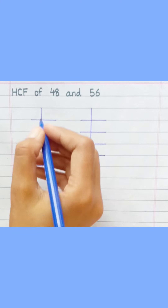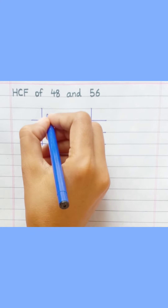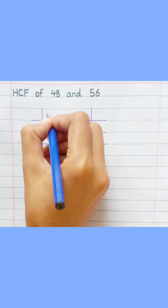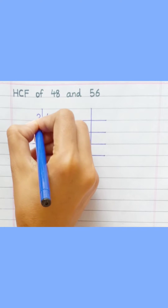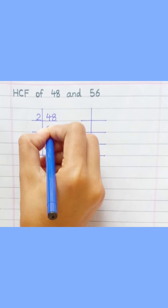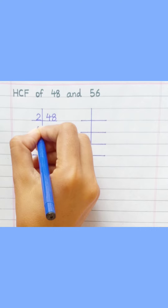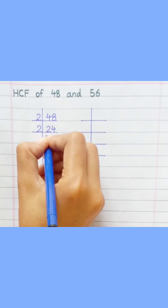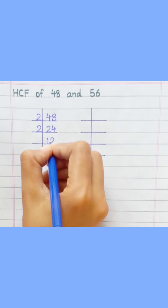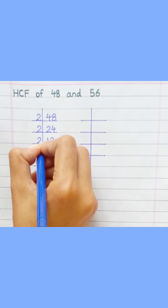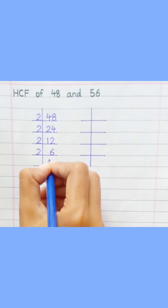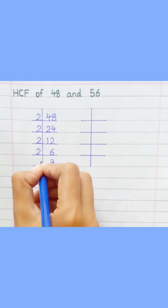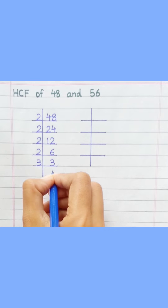HCF of 48 and 56. Starting with 48: 2 2s are 4, 2 4s are 8, 2 1s are 2, 2 2s are 4, 2 6s are 12, 2 3s are 6, 3 1s are 3.